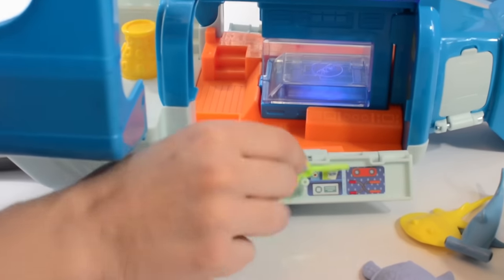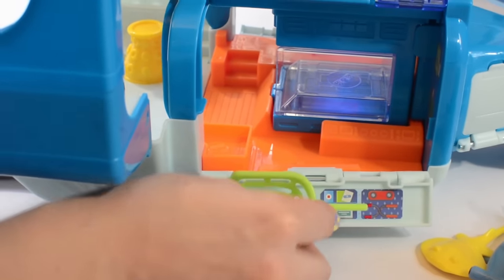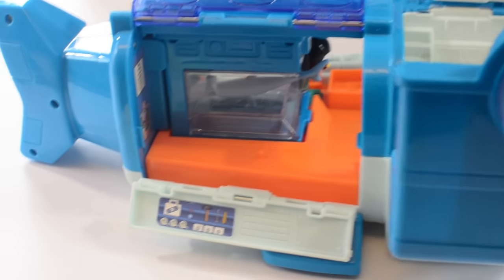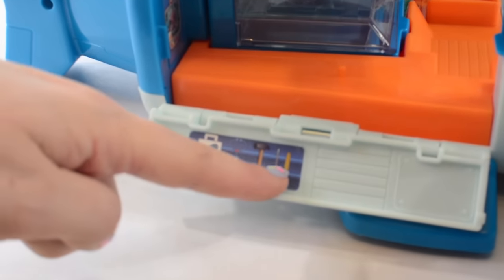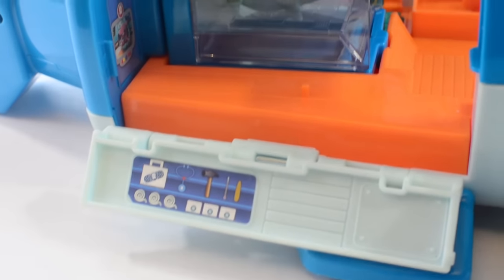Now let's check out all the little details in the gup W! Open the doors to reveal some supplies and a storage area for our rescue net! Let's check out the other side! Here we have Tweak's tools, Peso's stethoscope, medical bag, and some bandages!